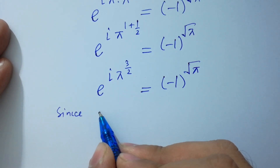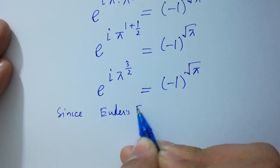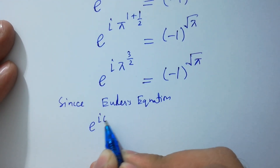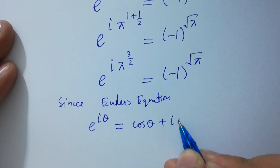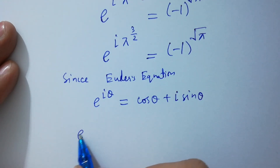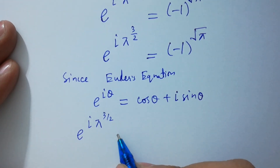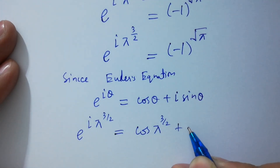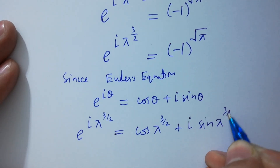Using Euler's equation, e to the power i·theta equals cosine theta plus i·sine theta, so e to the power i·pi to the power 3/2 equals cosine of pi to the power 3/2 plus i·sine of pi to the power 3/2.